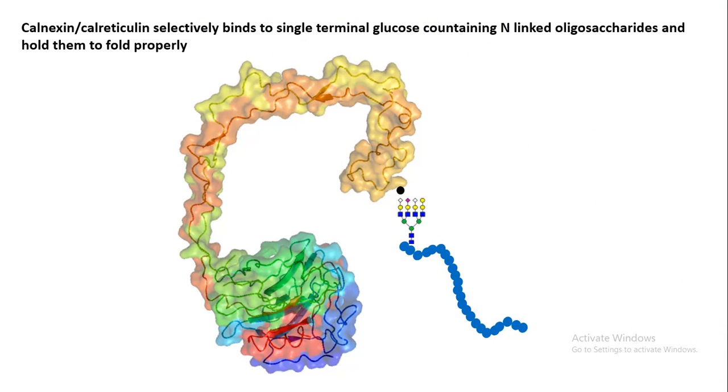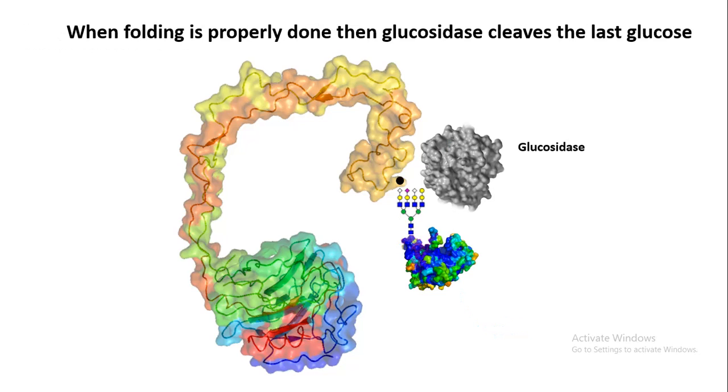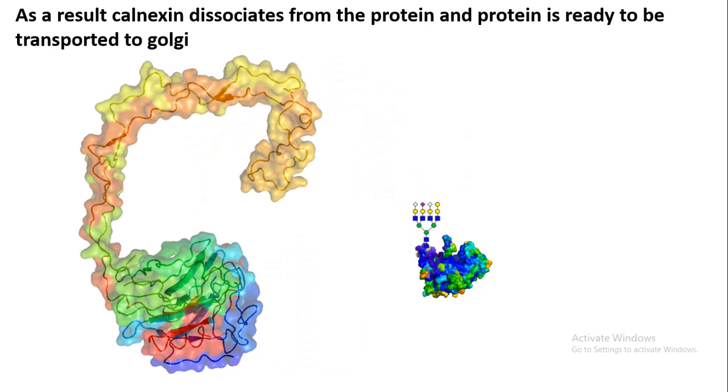Calnexin and calreticulin are basically calcium-binding lectins. Lectin means they bind to glucose moieties or recognize glucose moieties. On the nascent polypeptide there is the N-linked glycosylation tag, and on top of that tag there are glucose residues which are recognized by calnexin and calreticulin. It holds the nascent polypeptide and helps it to be folded properly. After that, a glucosidase molecule removes the last trace of glucose from the newly synthesized polypeptide, and thereby the polypeptide is ready to be delivered to Golgi.